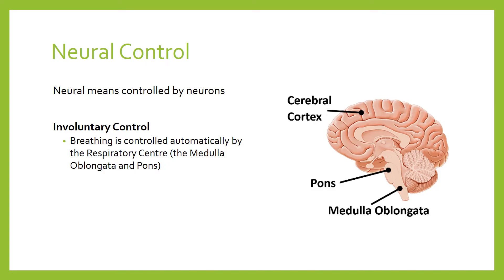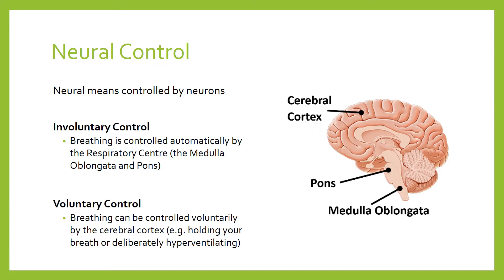As you know, you can hold your breath or hyperventilate if you choose, so there is a voluntary control aspect to neural control. Breathing can be controlled voluntarily by sending signals from the cerebral cortex — the part of the brain where conscious thought happens — allowing you to control rib cage expansion, the intercostal muscles, and the diaphragm deliberately.